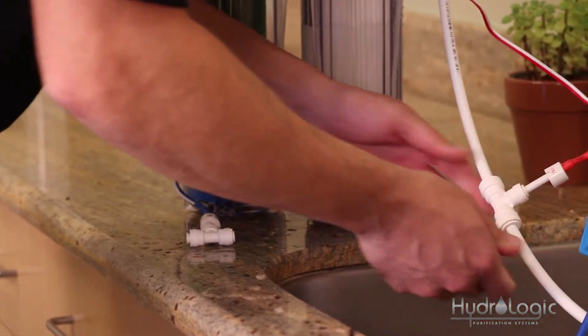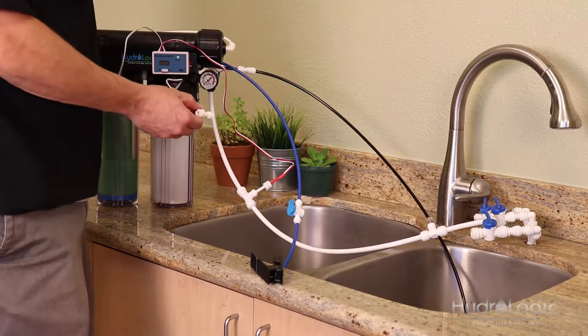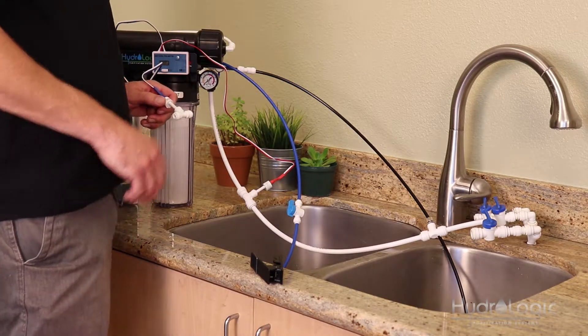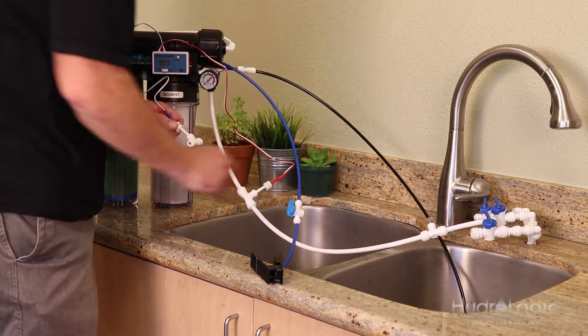And then you want to do the same for your out sensor, which again measures the PPMs of your RO water. So you want to install that somewhere between the system and your inline shutoff valve.